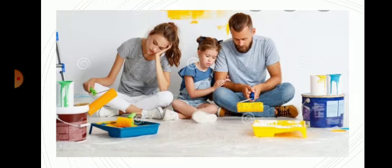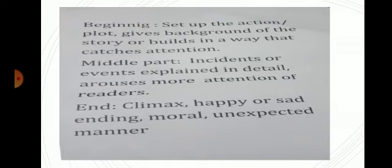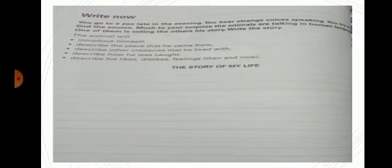So, actually, I am telling you a short story. Similarly, you are supposed to write that story. Once again, I will be concluding that. What are the things that should be mentioned in story writing? The beginning paragraph sets up the action or plot, gives background of the story, or builds in a way that catches attention. Then in the middle part, incidents or events are explained in a detailed way. It arouses more attention of readers. What should happen next? It should arouse our interest. Then end of the paragraph should be at a climax. Happy or sad ending, moral, unexpected manner. This is the format of short story.